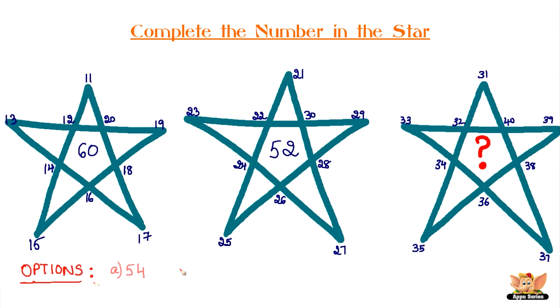Your options are: A. 54, B. 68, C. 42, D. 52.